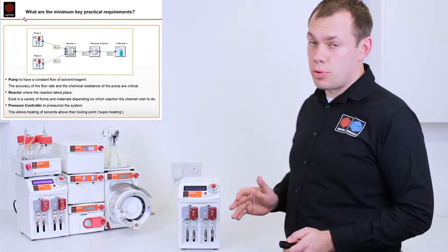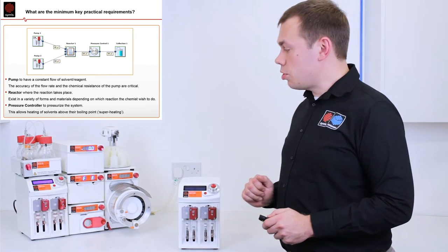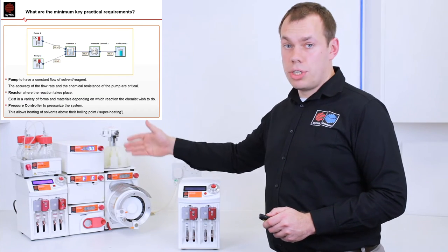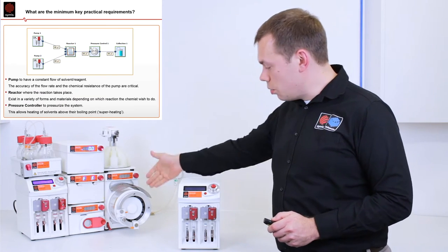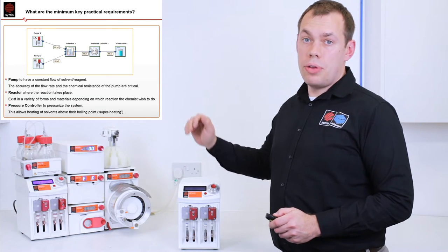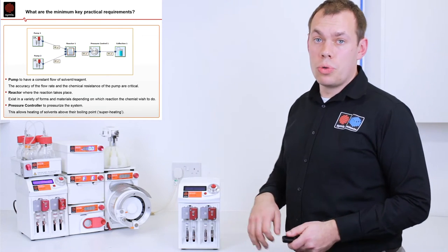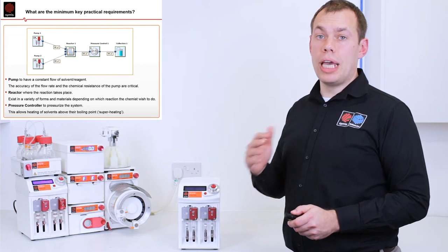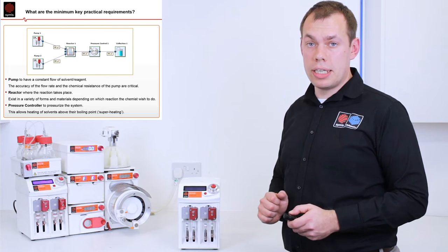So what do you need to do flow chemistry? To start flow chemistry you need a pump, you need a reactor which can be a glass microreactor or a tube reactor like here, and you need a back pressure regulator in order to unlock some of the advantages of flow chemistry such as being able to heat your solvent above the boiling point, also called superheating.